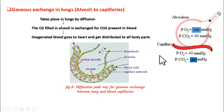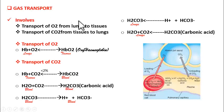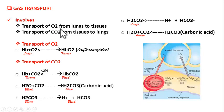This is about gaseous exchange in lungs. Our next event is gas transport. Blood is the transporter: it transports oxygen from lungs to tissues and transports carbon dioxide from tissues to lungs.